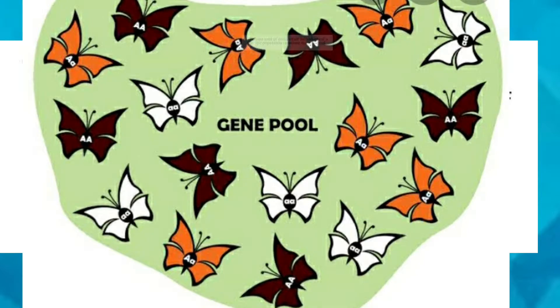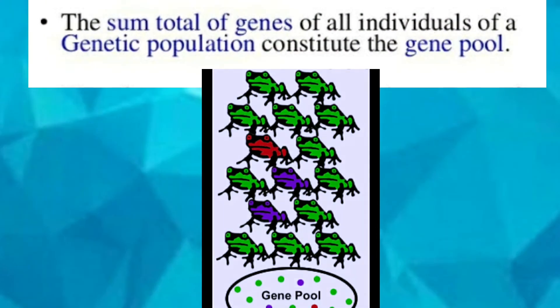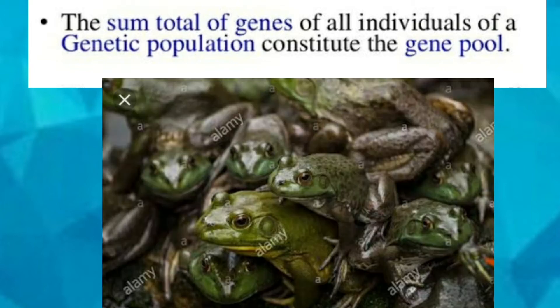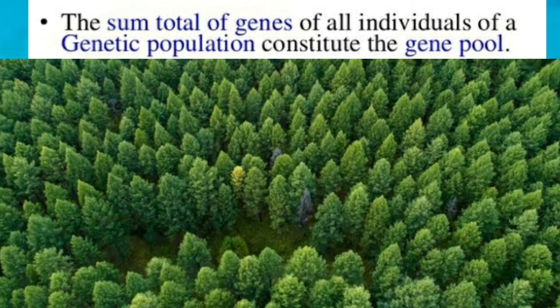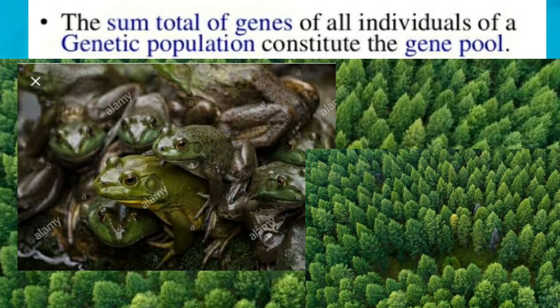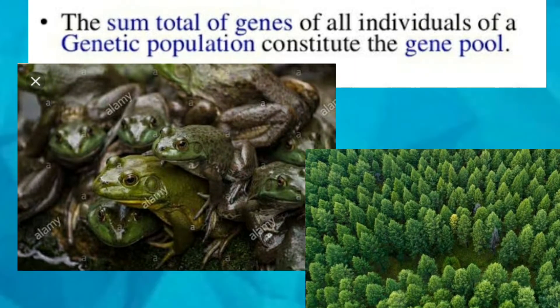What is a gene pool? A gene pool is a collection of all genes in a population — that can be any population, such as frogs in a pond or trees in a forest. A gene pool isn't a real place; it's an abstract or imaginary collection.